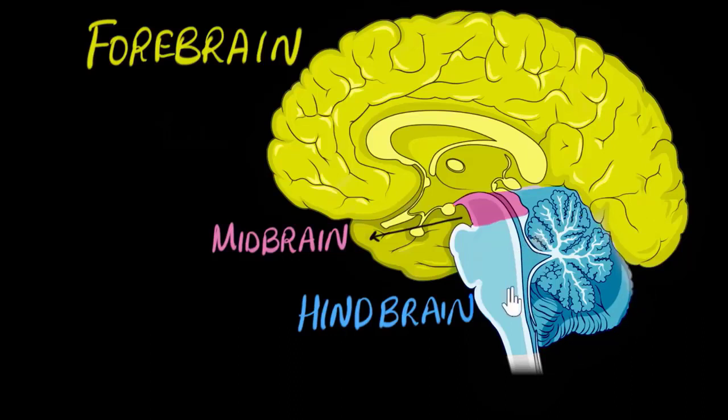This part of the hindbrain itself looks like a mini brain all by itself. That structure along with the remaining portion of the brainstem is basically what we call the hindbrain.